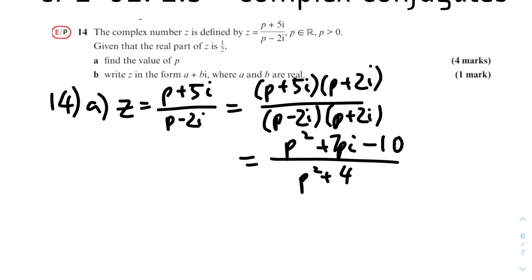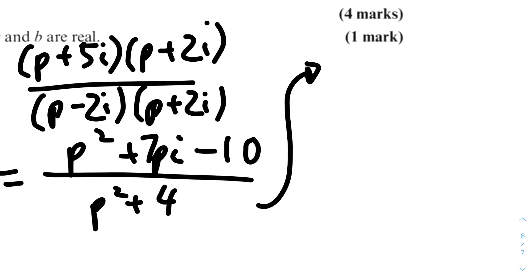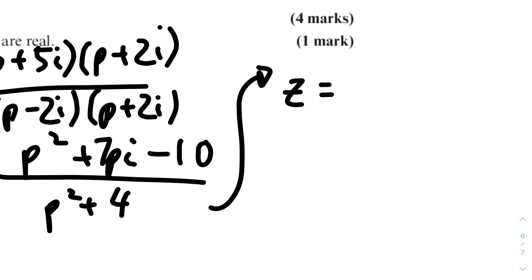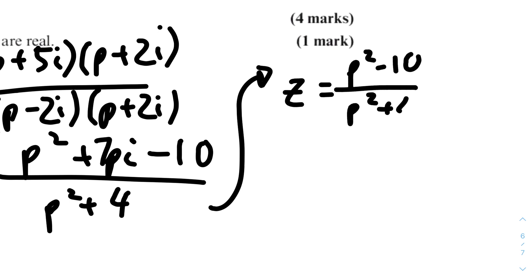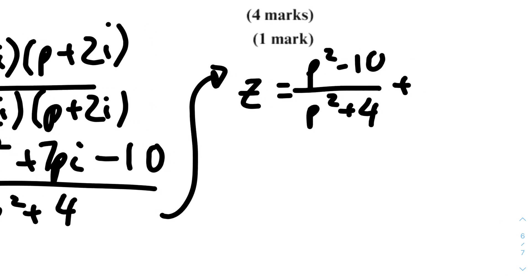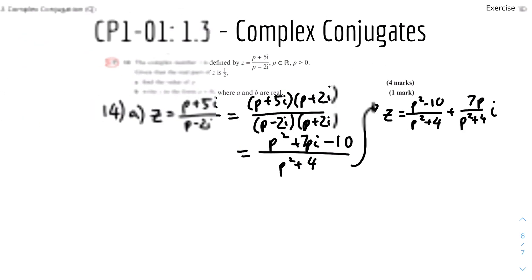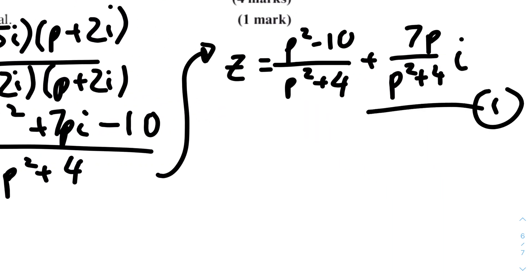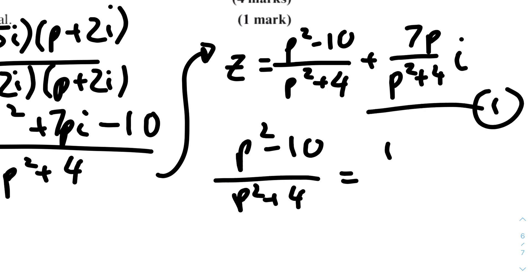We can group real and imaginary parts. We know the real part of z is 1/2, so (p² - 10) / (p² + 4) = 1/2. By cross multiplication: 2p² - 20 = p² + 4, which gives p² = 24. Therefore p = ±√24 = ±2√6.